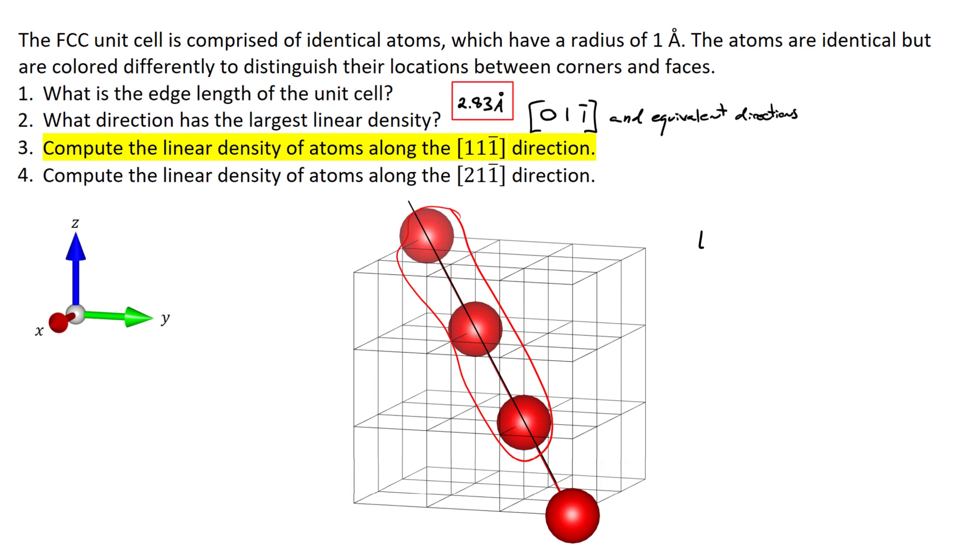So the linear density in that direction is going to be equal to three atoms divided by the length of that line. Because I'm using a unit cell that is three times longer on each side, I've got 3a by 3a and the length of that line squared is going to be equal to three times 3a squared, or the length of the line is going to be equal to the square root of 27 times a, which is equal to 2.83 angstroms.